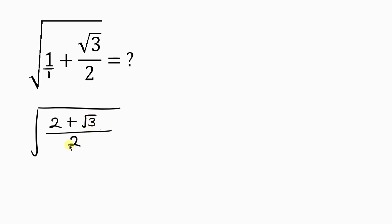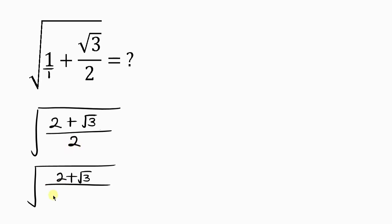Our next step will be to make the denominator a perfect square. And how do I make the denominator a perfect square? It is simply by multiplying it by 2. So we have the square root of 2 plus root 3, all over 2 times 2. But we can't just multiply the denominator by 2 without also multiplying the numerator by 2, so we are still going to balance this by multiplying the numerator by 2, so that the numerator becomes 2 times 2 plus root 3.